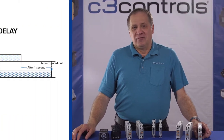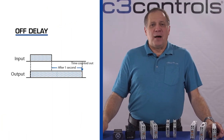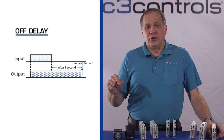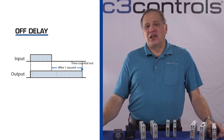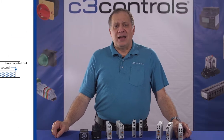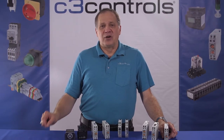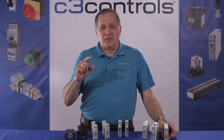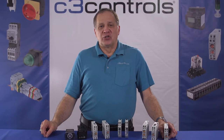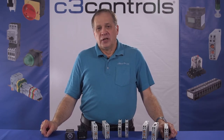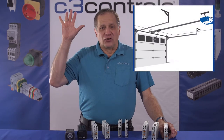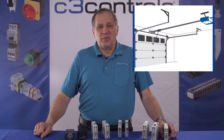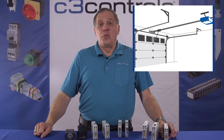Off delay. With off delay operation, the output turns on at the same time as the input, and then the output turns off when the timer contacts open after the set time has expired. The set time is calculated from when the timer input turns off. This name is used because there is a delay between when the input turns off and when the output turns off. For example, when you open or close your garage door, the ceiling light turns on and remains lit for a few minutes after you open or close the door.